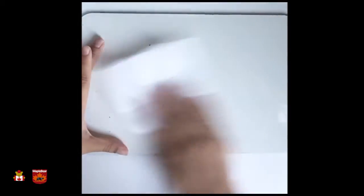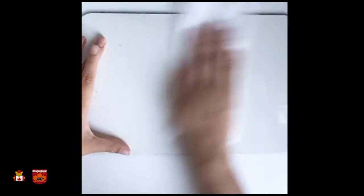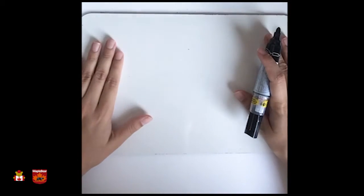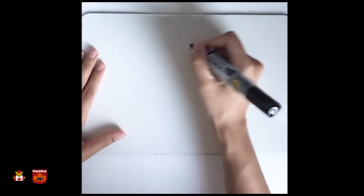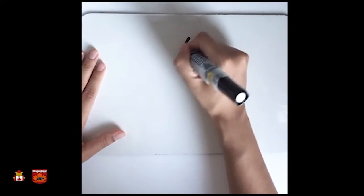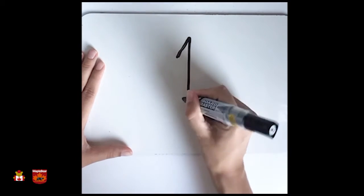The first one that we are going to do is number one, okay? Here I'm using a board, but you can also use paper, whatever you have at home. So first number is number one. First you trace the number, number one.